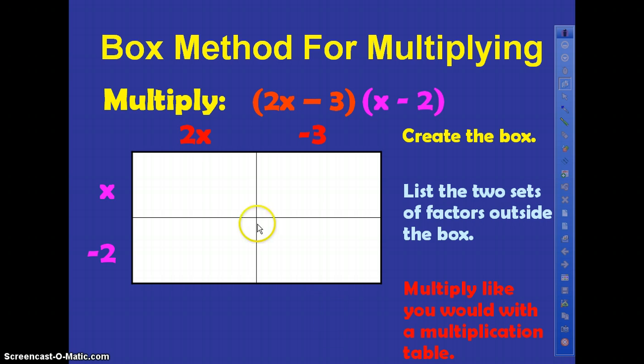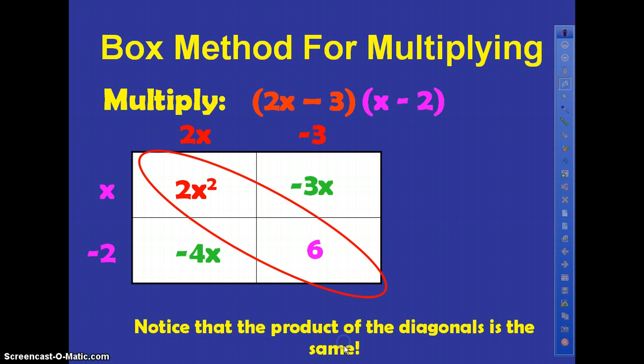Now we're going to multiply just like you would with a multiplication table. What's 2x times x? Yeah, you get 2x squared. What's negative 3 times x? The answer goes here: negative 3x. What is 2x multiplied by negative 2? The answer goes here: negative 4x. What's negative 3 multiplied by negative 2? Yeah, you get 6.